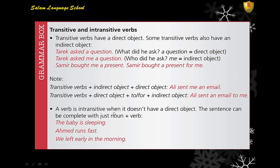Intransitive verbs don't have a direct object — they don't need one. The sentence can be completed with just a noun plus the verb. For example: 'The baby is sleepy' — no object. 'Ahmad runs fast' — 'fast' is not an object, it's an adverb. 'We left early in the morning' — no object at all.